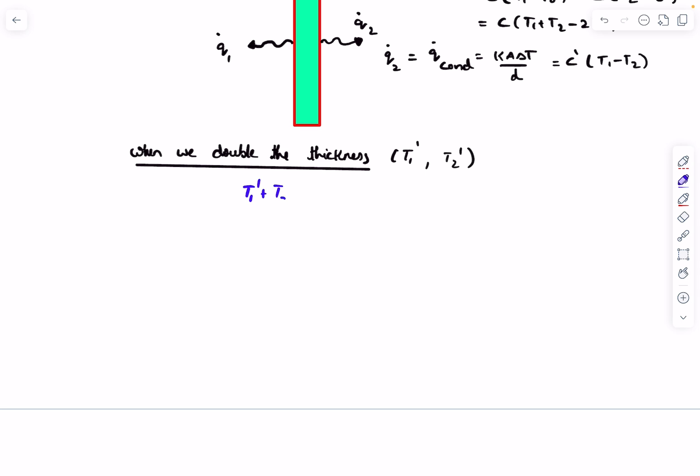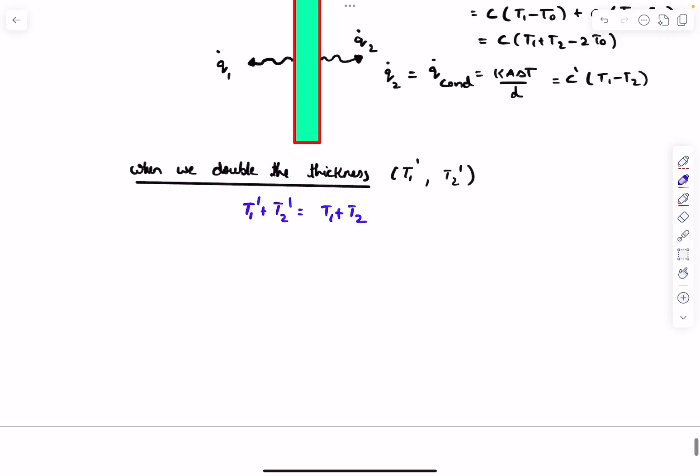We can write T1 prime plus T2 prime equals T1 plus T2 using the first equation. In this equation, the new value for Q2 dot is going to be the constant C multiplied by T2 prime minus T naught.